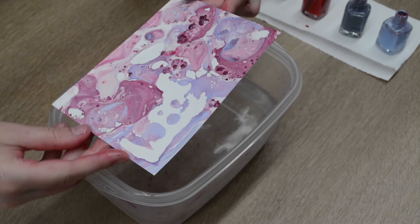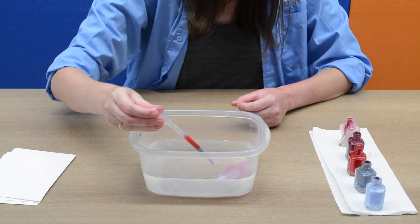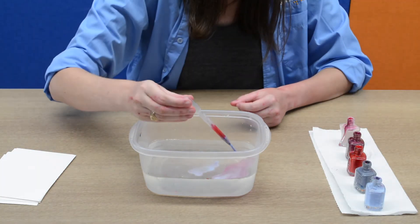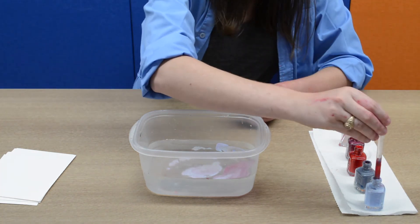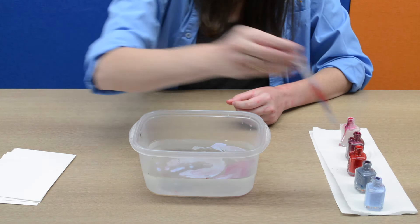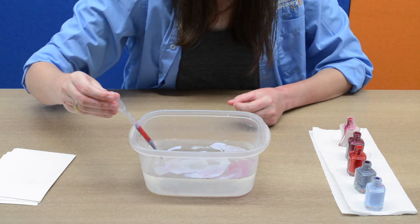Since liquid polish floats on water, the density must be less than that of water. And once the polish is floating, it is actually easy for the solvent to evaporate into the air. This is that odor you smell when doing your nails.